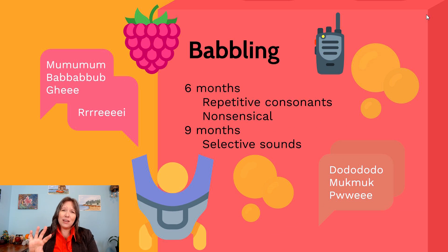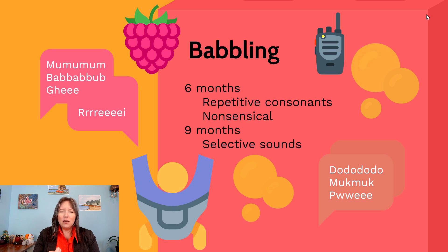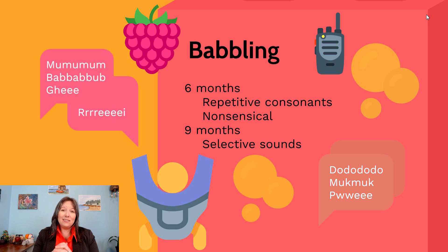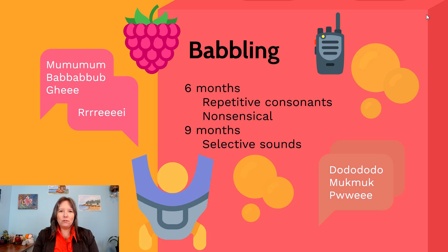Around six months of age, the brain's pathway to the lips and tongue begins to mature, and infants can start making consonants. Unlike vowels, consonants rely on the lips and tongue. The consonants that develop earliest, regardless of culture or home language, tend to be M, B, and D. At this stage, babbling includes all possible sounds, even those that don't exist in the infant's culture, produced repetitively.